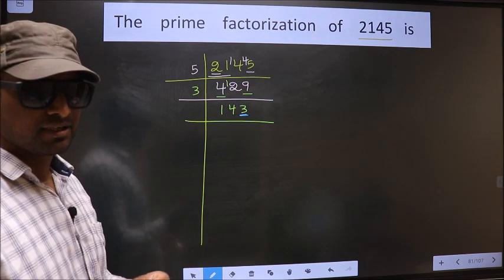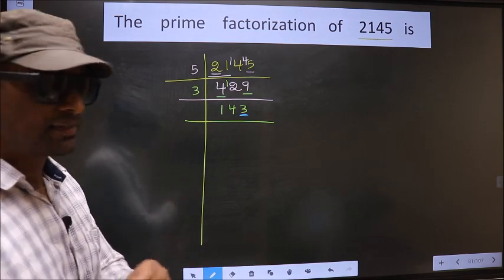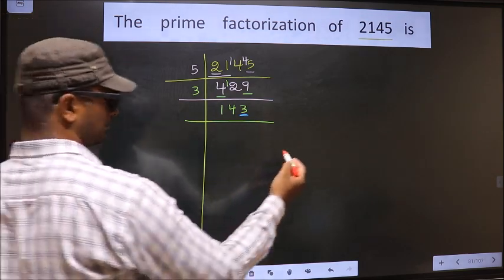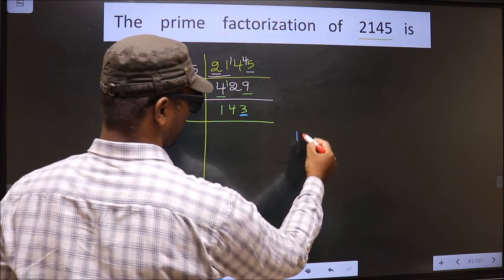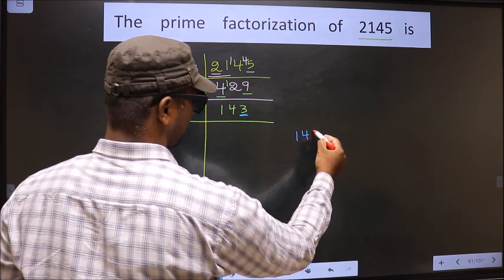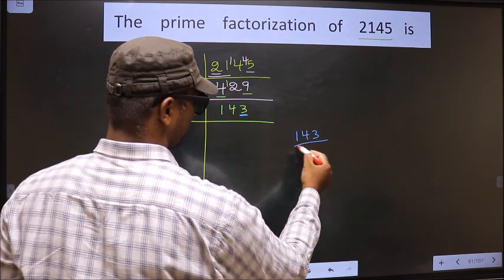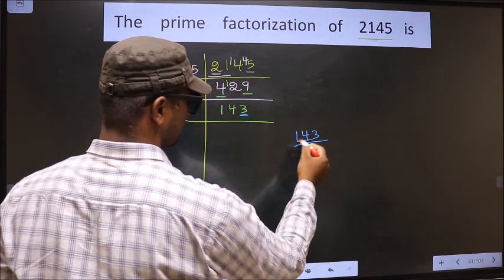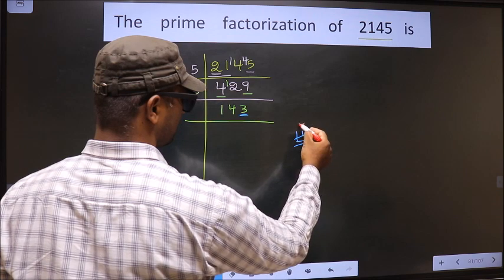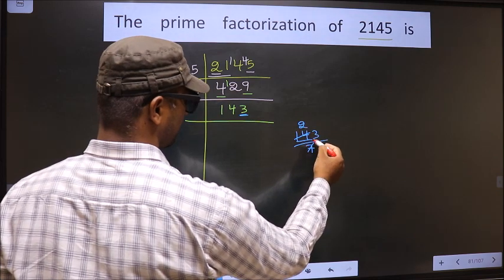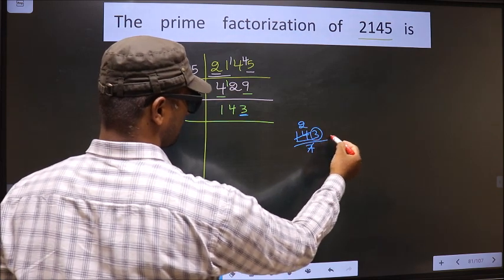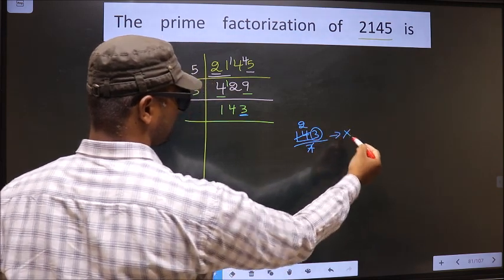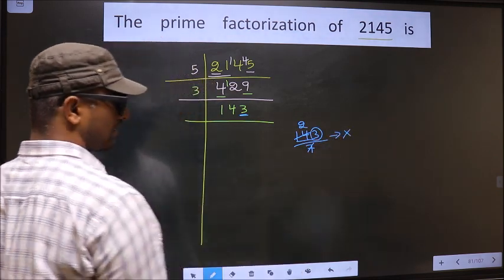Next, prime number 7. To check divisibility by 7, we check in this way: 7 × 1 = 7, 7 × 2 = 14, and 3 is left. So this number is not divisible by 7.